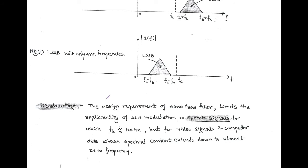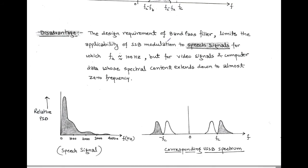In the case of a speech signal, the bandpass filter operates satisfactorily, but it has a disadvantage. The design requirement of the bandpass filter is limited to speech signals having a lowest frequency component of approximately 100 Hz. But for video signals and computer data, they have almost zero energy gap. So, the single sideband modulation technique cannot be used for video signals and computer data.